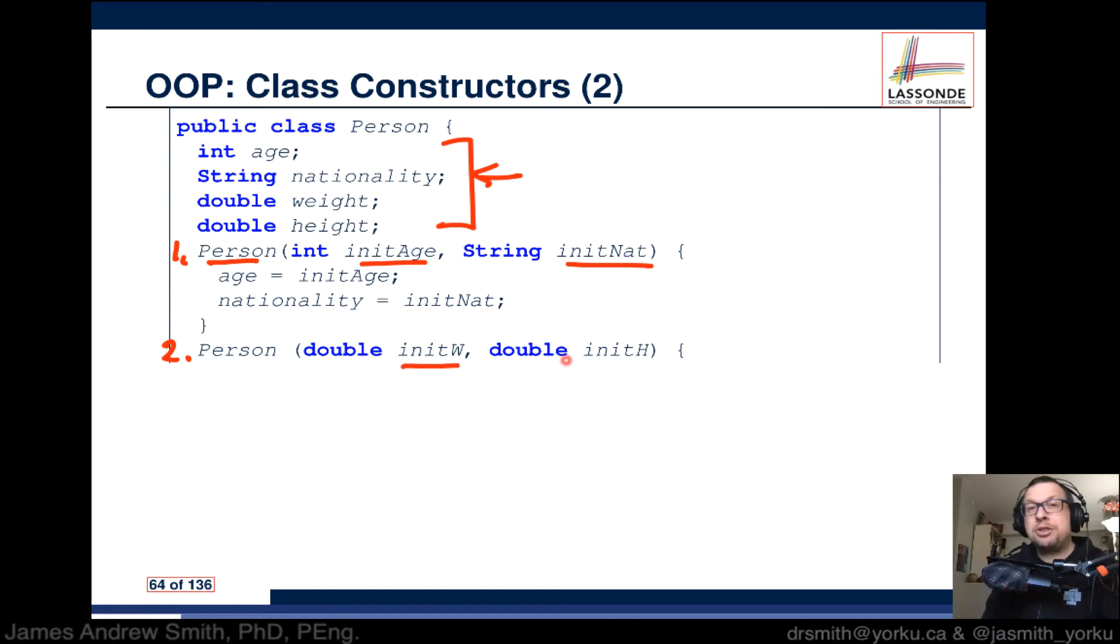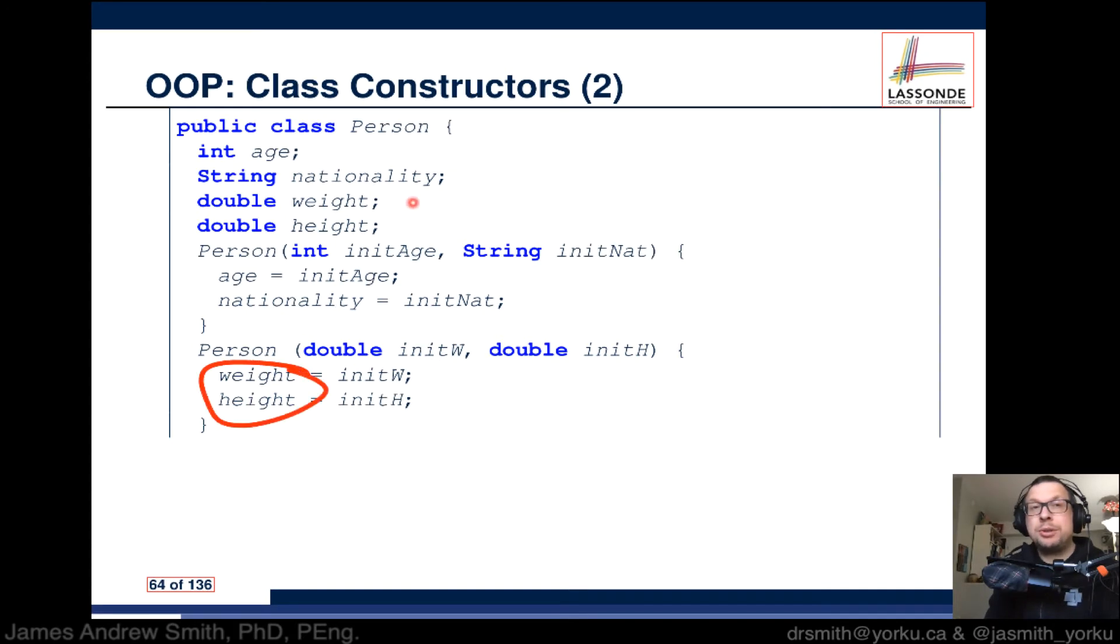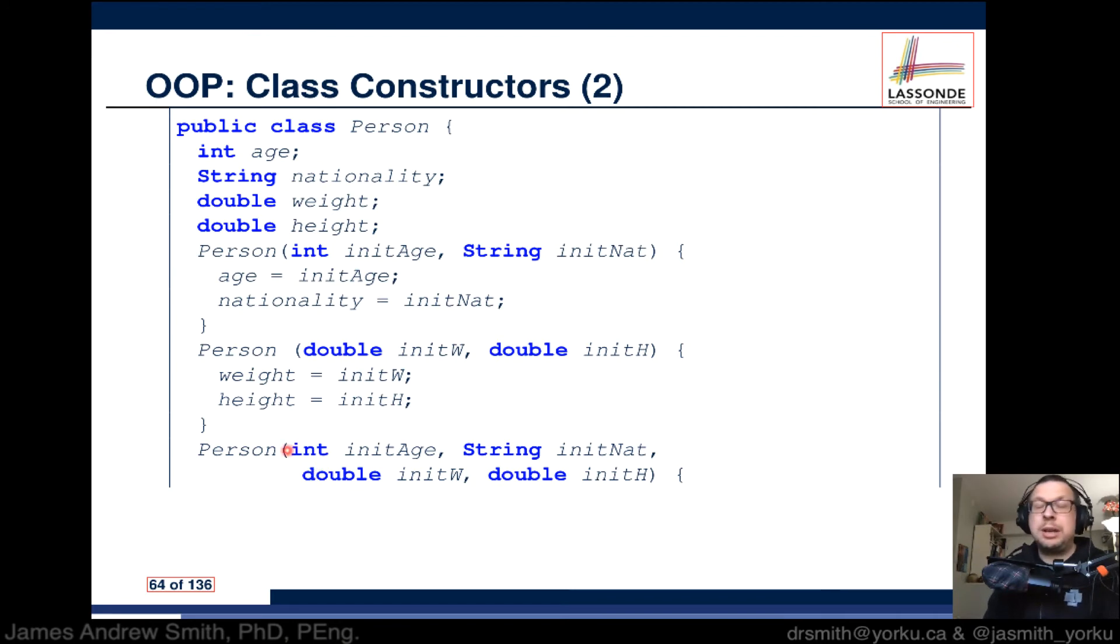We assign those to these two internal variables. But there's a third one here. We set up internal parameters. We have input parameters, four of them, and those four will connect to all four of those internal variables for the class.